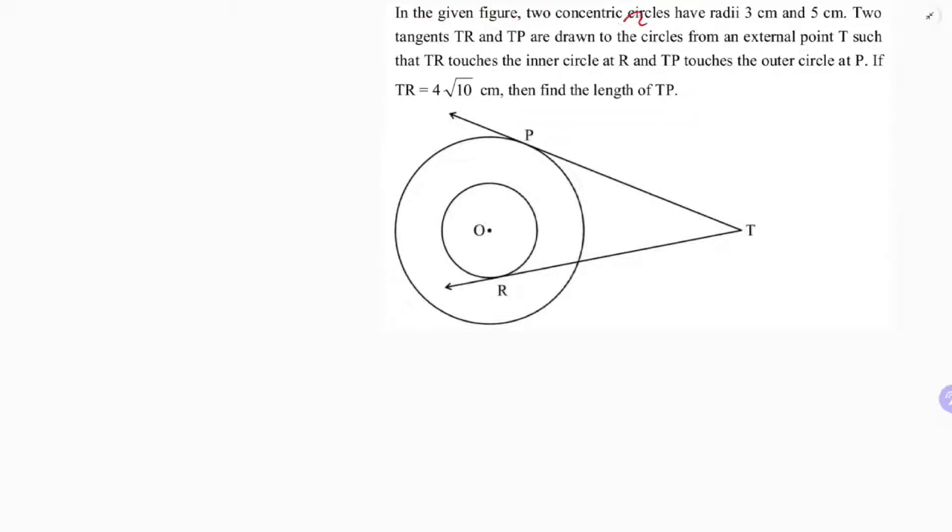In the given figure, two concentric circles have radii 3 cm and 5 cm. Two tangents TR and TP are drawn to the circles from an external point T such that TR touches the inner circle at R and TP touches the outer circle at P.